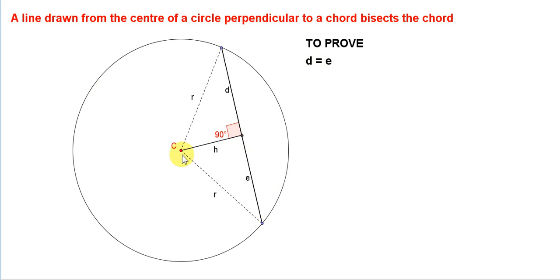To do this proof, we join C to the endpoints of the chord. We have these two dotted lines, which are radii of this circle. The two dotted lines have the same length, which I'm calling R.